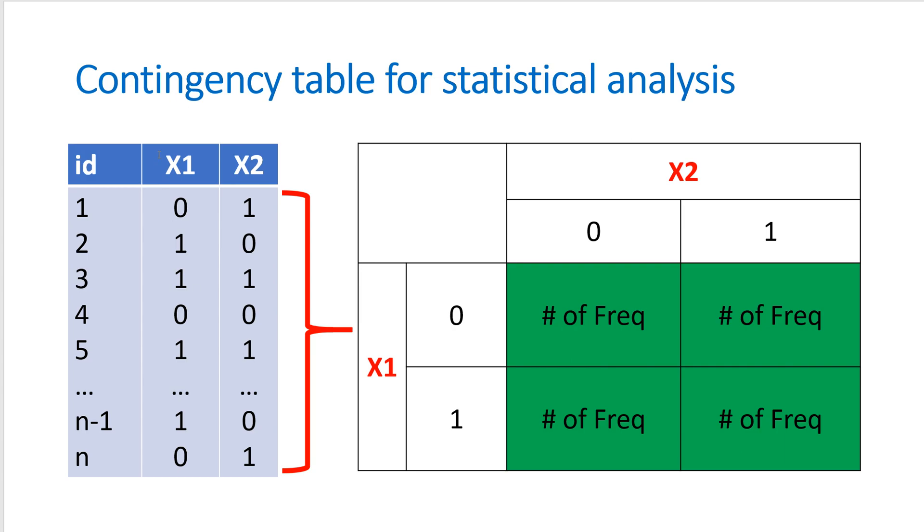When both variables are categorical, it is common to construct this kind of contingency table for further statistical analysis. In this case, we typically do not designate one variable as y variable and the other as x variable. Instead, we focus on examining the relationship between the two variables by organizing their categories in a contingency table.